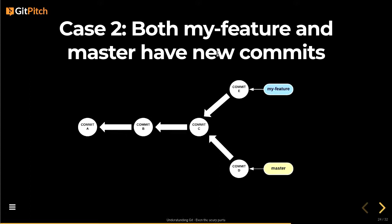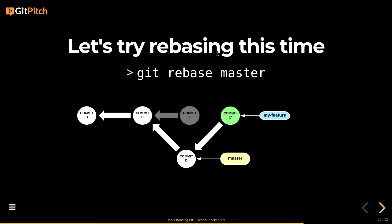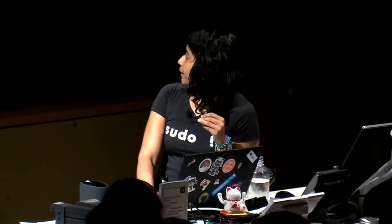If you try rebasing instead, Git creates a new commit — the green one — taking the changes from your commit E and placing them on top of commit D. The commit hash will be different because it's a different commit. The original commit E gets garbage collected since it no longer serves any purpose, resulting in a more linear history. Same end result as a merge, but it looks different.